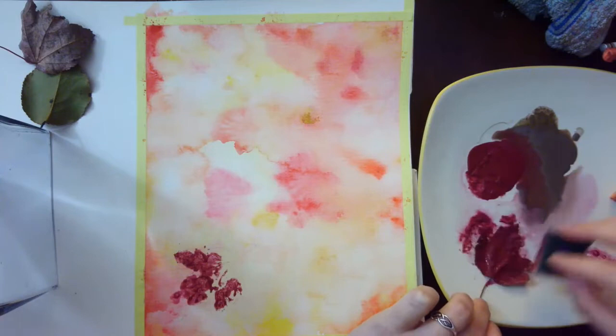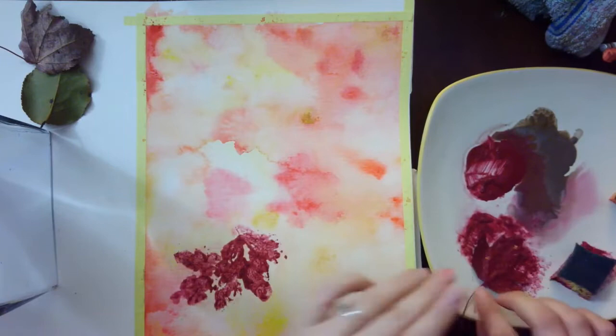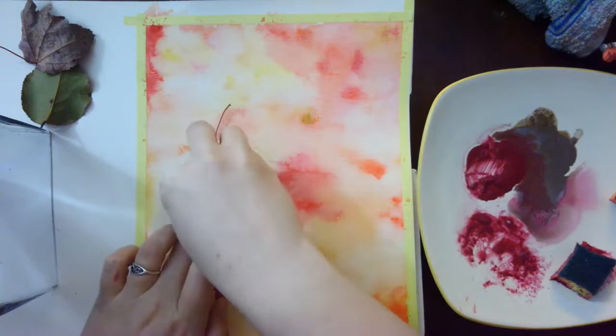Be sure to hold down the leaf, pressing in all the corners. Another strategy you can do is to place the leaf down and use a sponge, dry with no water, to press down all the spaces.